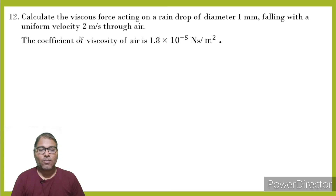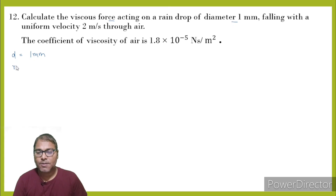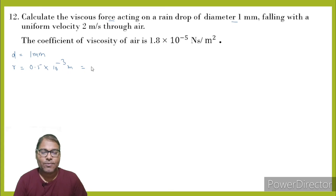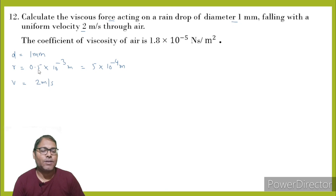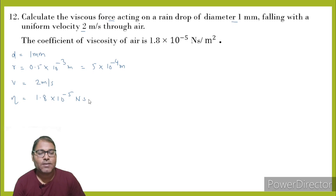Question number 12: Calculate the viscous force. Diameter is 1 mm, so radius r equals 0.5 mm, which is 5 into 10 raise to minus 4 meter. Velocity is 2 meter per second. Coefficient of viscosity eta is 1.8 into 10 raise to minus 5 Newton seconds per meter square.